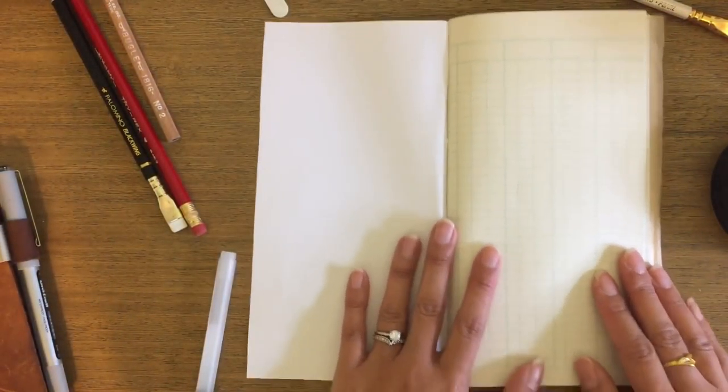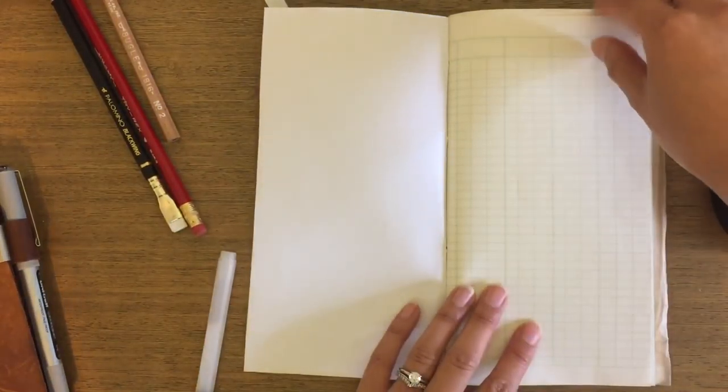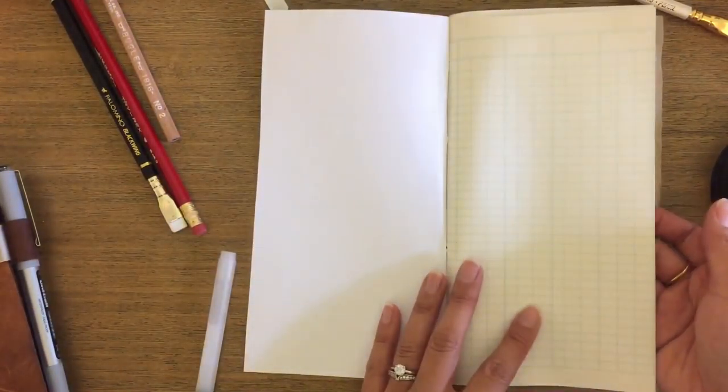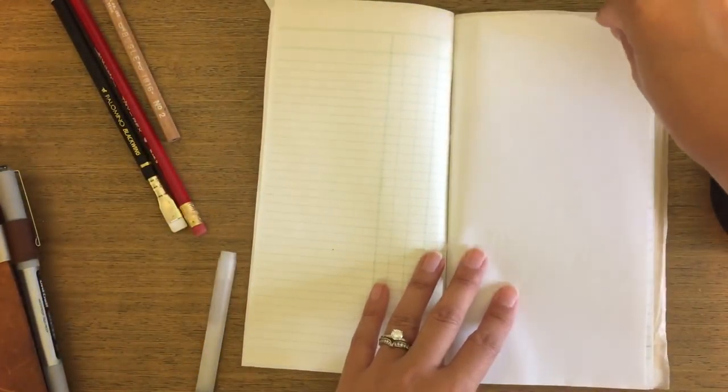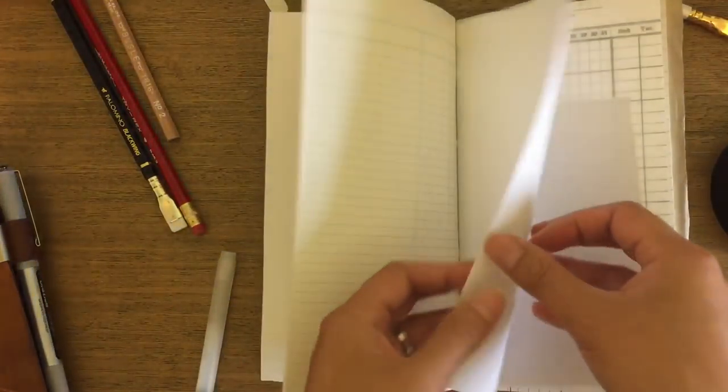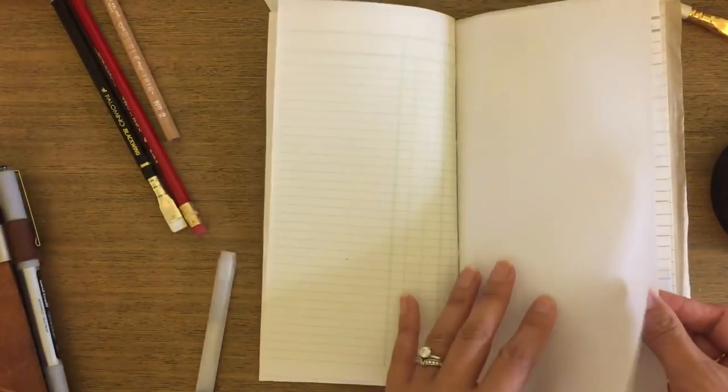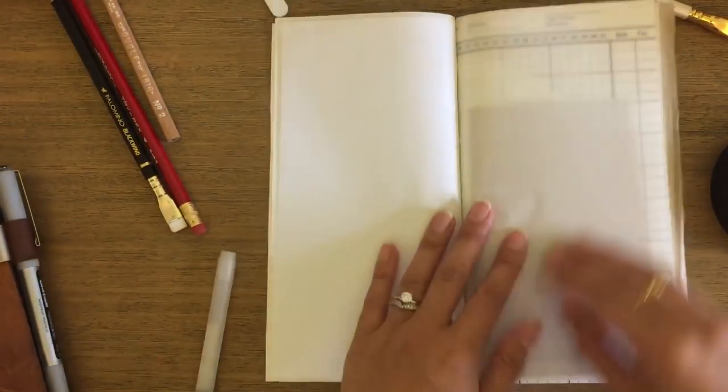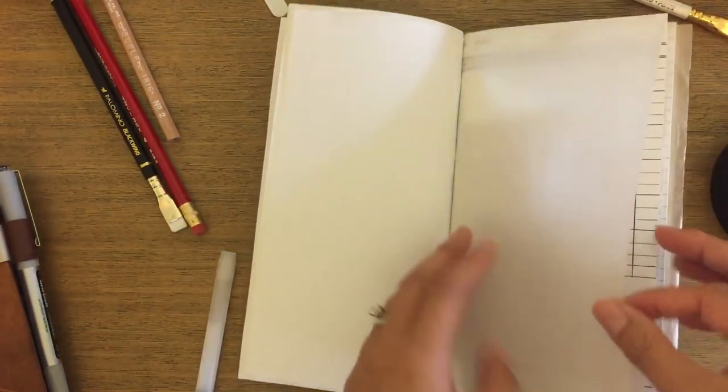This is vintage ledger paper that I've got a couple pads of that I've been trying to use up. This is paper from Daiso, it's like their calligraphy paper, so I added a few sheets of that.